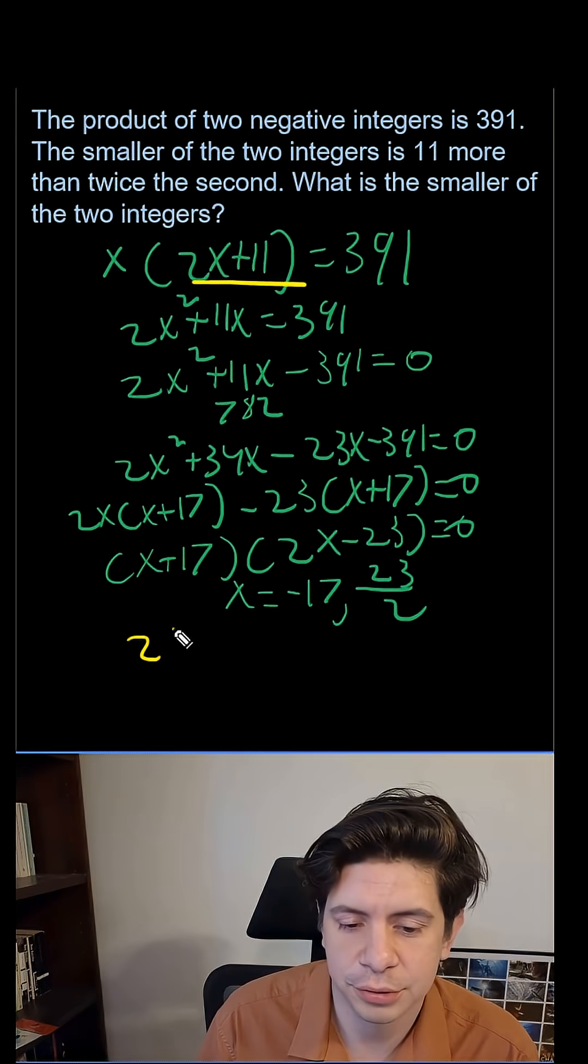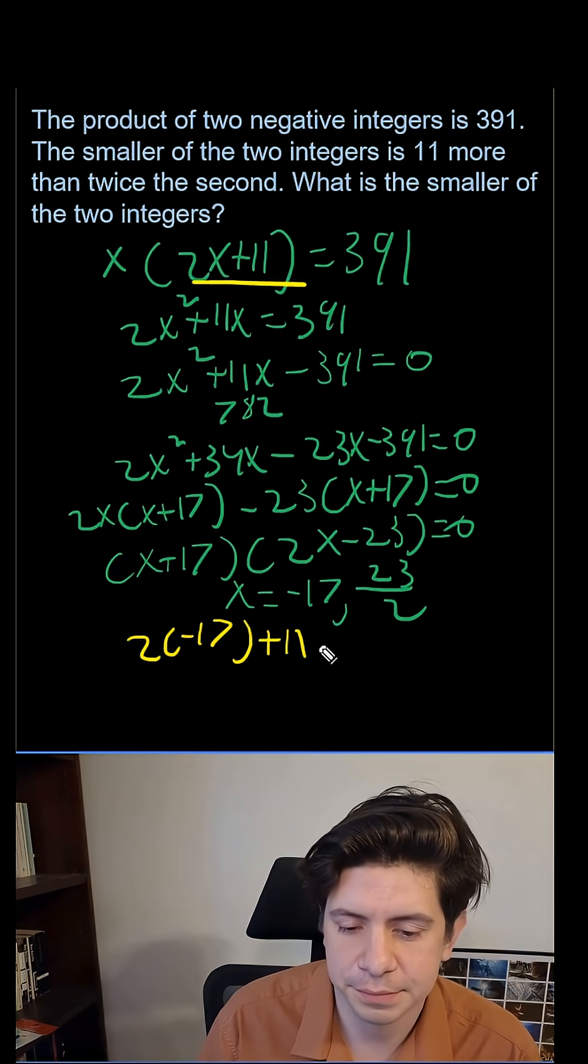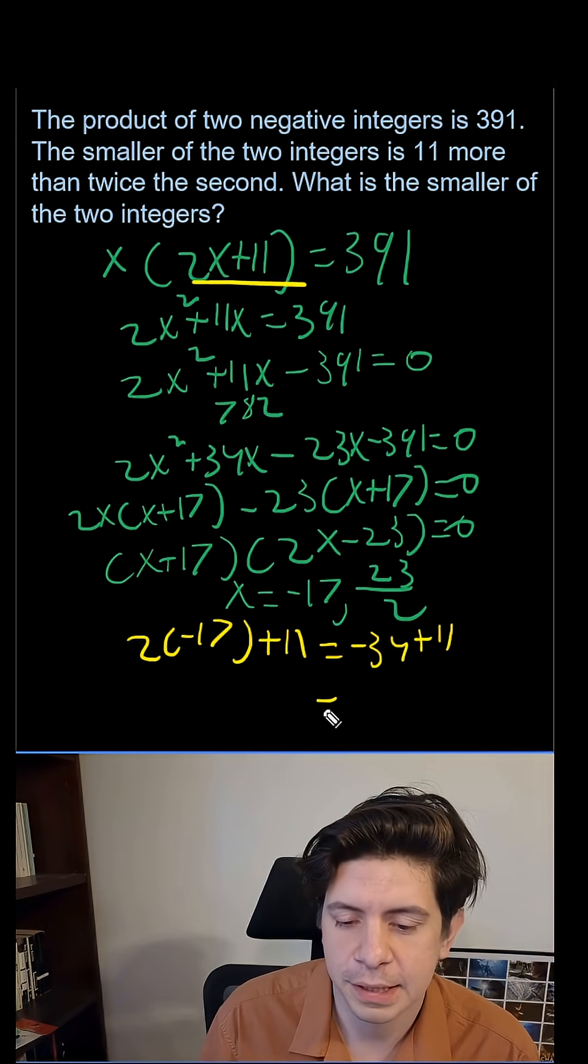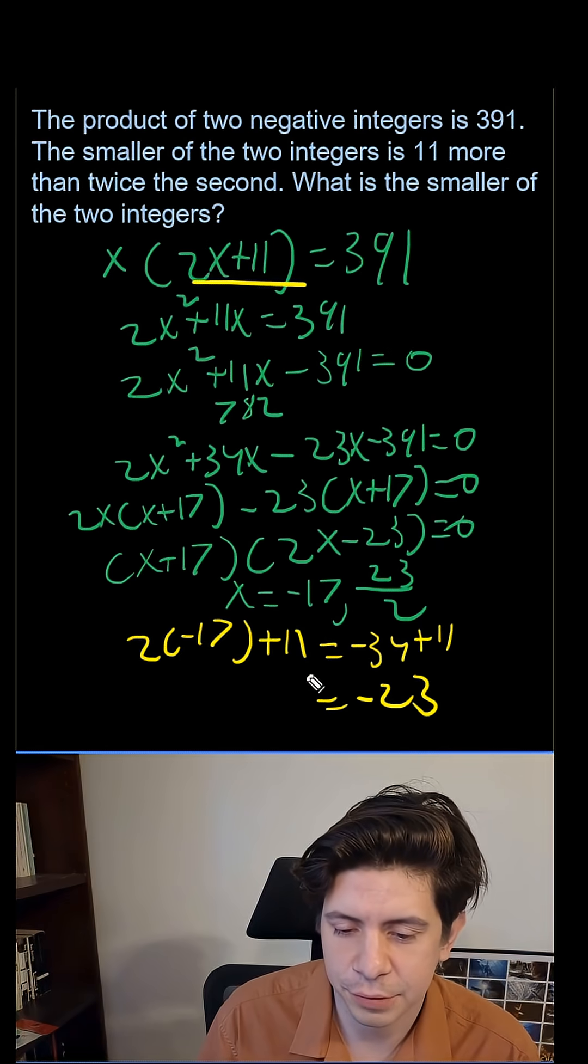And that will be 2 times negative 17 plus 11. That's going to get you negative 34 plus 11. And your answer will be negative 23.